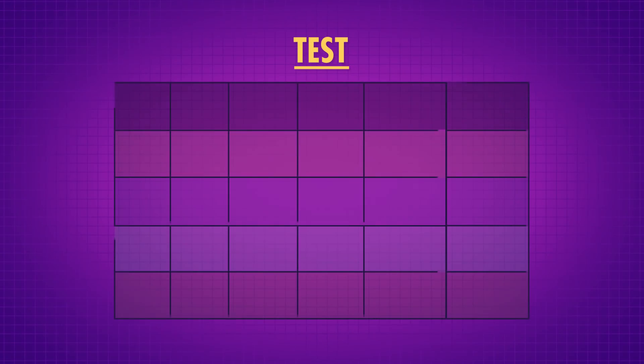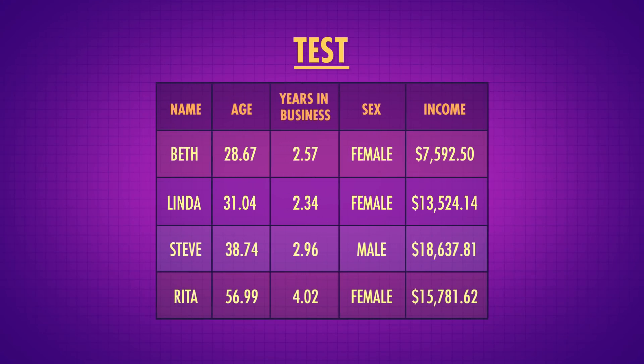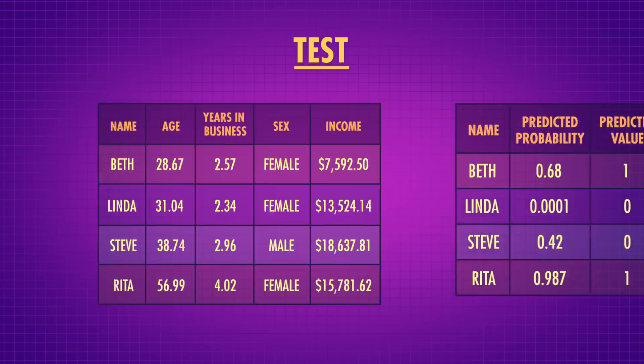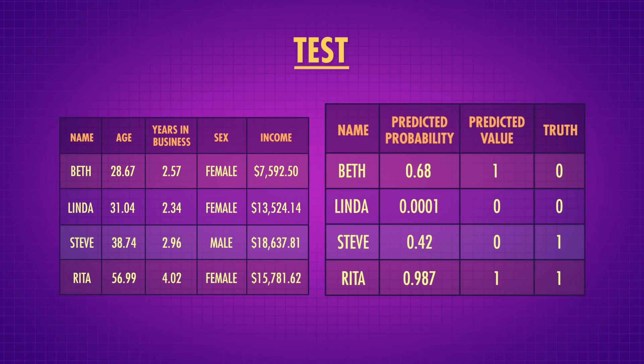We need to be able to test whether our model will be good at predicting data it's never seen before — data it doesn't have the correct answer for. So we need to pretend that some of our data is future data for which we don't know the outcome. One simple way to do this is split our data into two parts. The first portion, called the training set, is the data we use to create or train our model. The other portion, called the testing set, is the data we're pretending is from the future — we withhold outcomes and ask the model to make predictions.